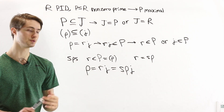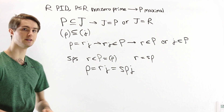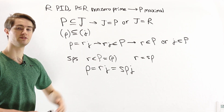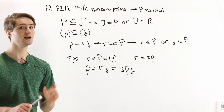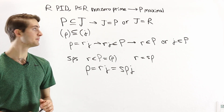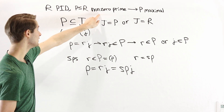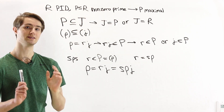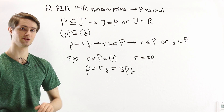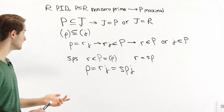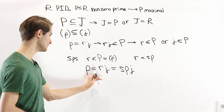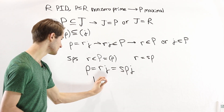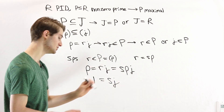We have a cancellation rule because we're in a PID — we can cancel factors on both sides of an equation as long as they're not zero. We said P was a non-zero prime ideal, which means the element p is not equal to zero, so we can cancel it. On the left side we're left with 1, and on the right side we're left with s times j.